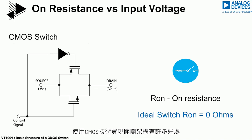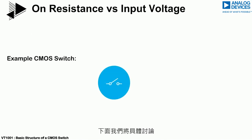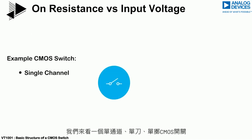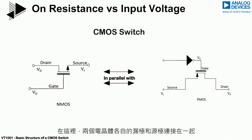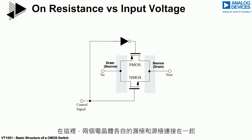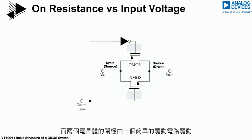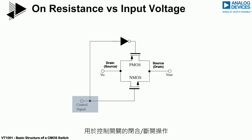CMOS technology offers many benefits when used in switch architecture. Looking at a single channel, single pole, single throw CMOS switch, which consists of an NMOS and PMOS transistor connected in parallel — here the respective drains and sources of the two transistors are tied together and become the switch terminals VIN and VOUT, while the gates of the two transistors are driven by a simple driver circuit to control the on-off action of the switch.